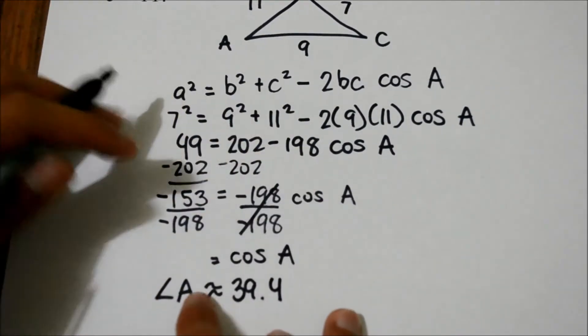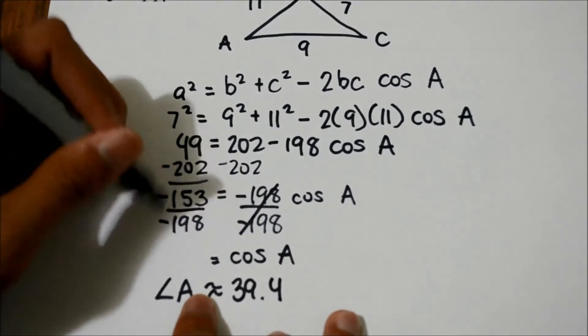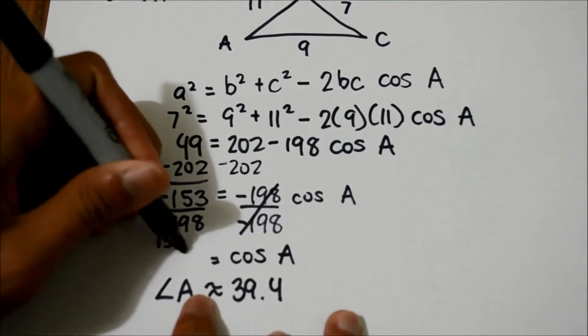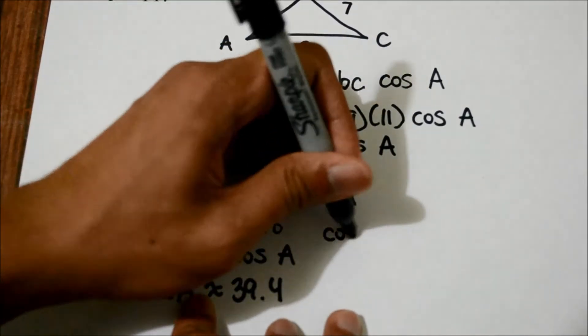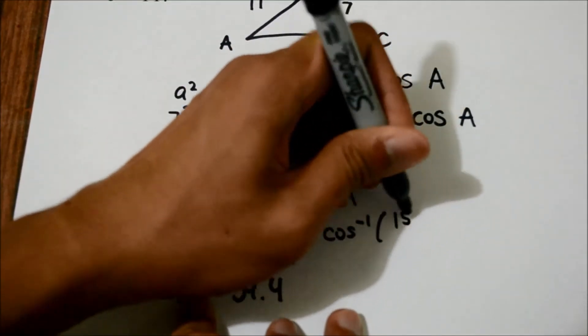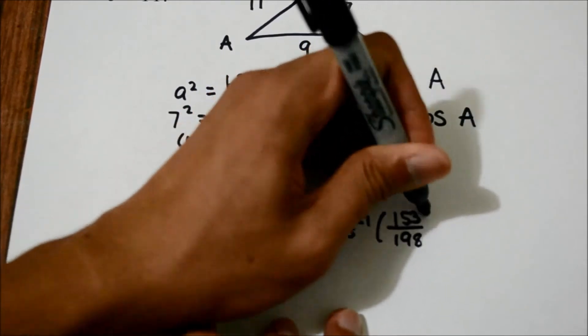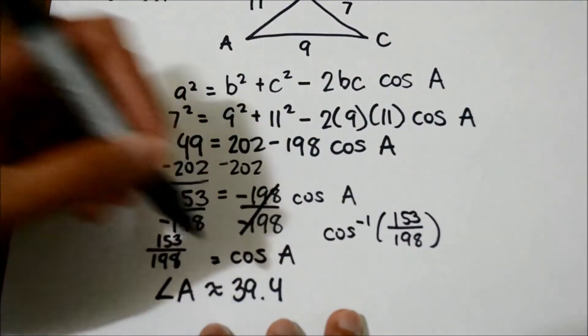Now before that, let's simplify this one so it's going to be 153 over 198, and then we can use the calculator to find the inverse cosine, which will lead you to this angle.